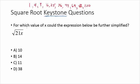This question says: for which value of x could the expression below be further simplified? We've got the square root of 21x, and we've got four choices: 10, 14, 11, and 38. When they say 'further simplified,' they mean that if we plug one of these answers in, we should be able to take out a perfect square — it could be up to 10 or even higher.